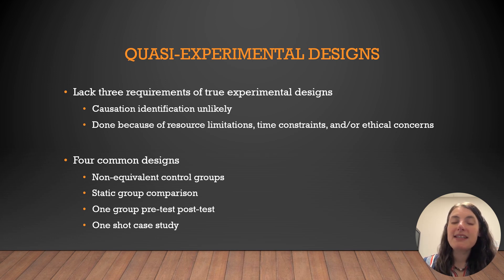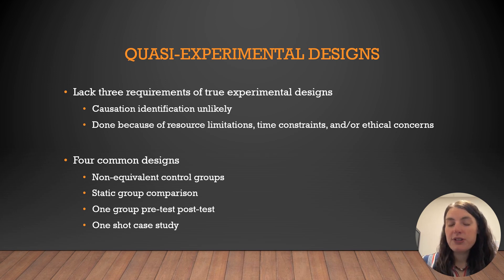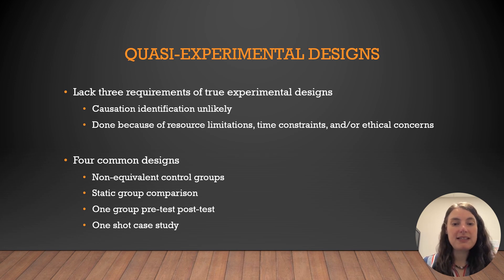Quasi-experimental designs are not as strong for proving causation because of these limitations, but they're often necessary due to resource limitations, ethical concerns, or other research constraints. There are multiple types of quasi-experimental designs, but in this course you'll only be required to remember four specific designs: the non-equivalent control group design, the static group comparison design, the one-group pretest post-test design, and the one-shot case study.